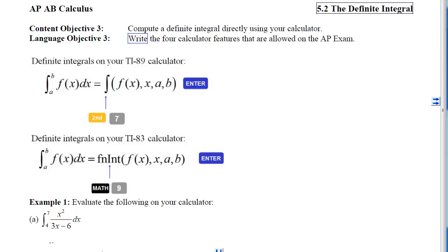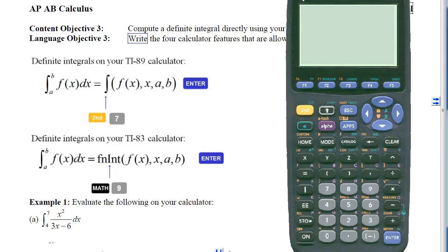In order to compute definite integrals on your TI-89 calculator, you're going to access this integral symbol, and it is located under 2nd7. On your calculator, you can see right above the number 7, you have this integral symbol. So if we want to put this into the calculator, we have to tell it the integrand, we have to tell it the letter we are integrating with respect to, and we have to tell it the lower and upper limits.